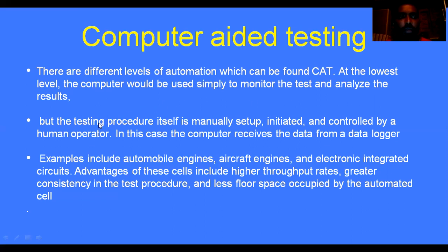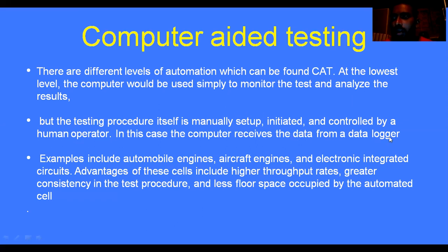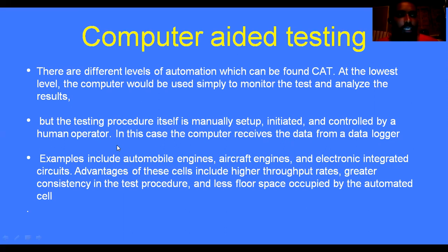The testing process itself is manually set up and controlled by a human operator. In this case, the computer receives the data from a data logger. The data logger provides complete data about the testing. Examples include automobile engines, aircraft engines, and electronic integrated circuits. Advantages include higher throughput rates, greater consistency in the test procedure, and less force applied by the automated systems.